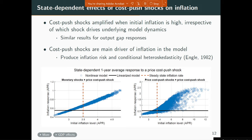We redo this for the other six shocks — financial shocks, demand shocks, and government spending shocks — and get the same qualitative, sometimes even quantitative results. Each shock has this amplification feature.